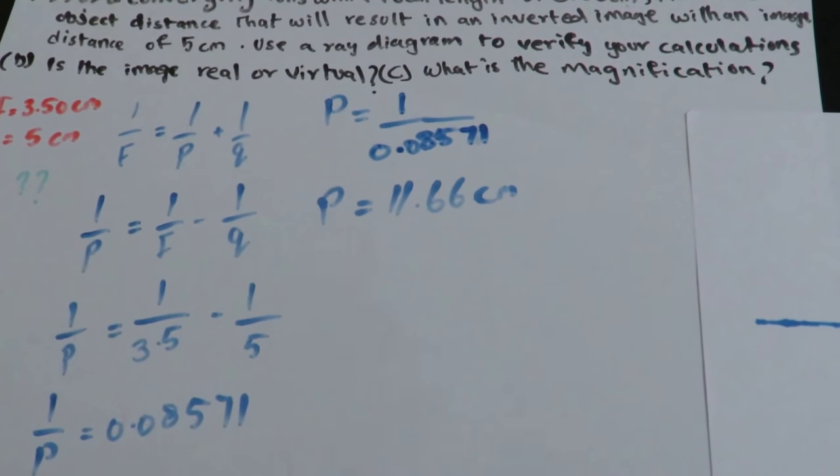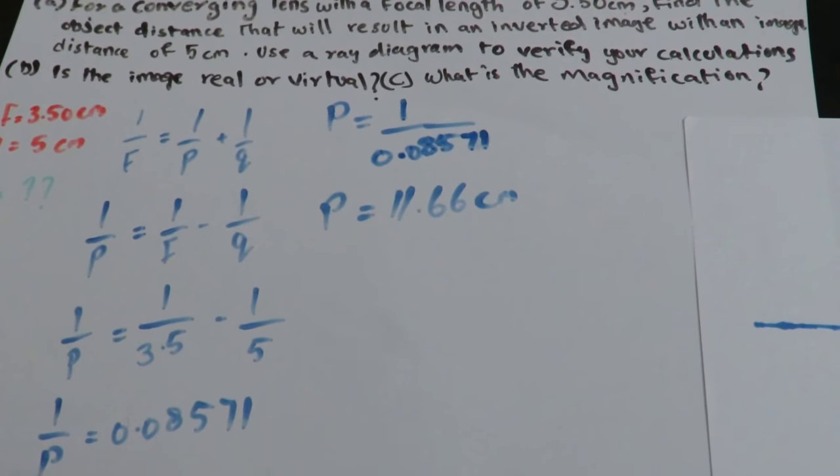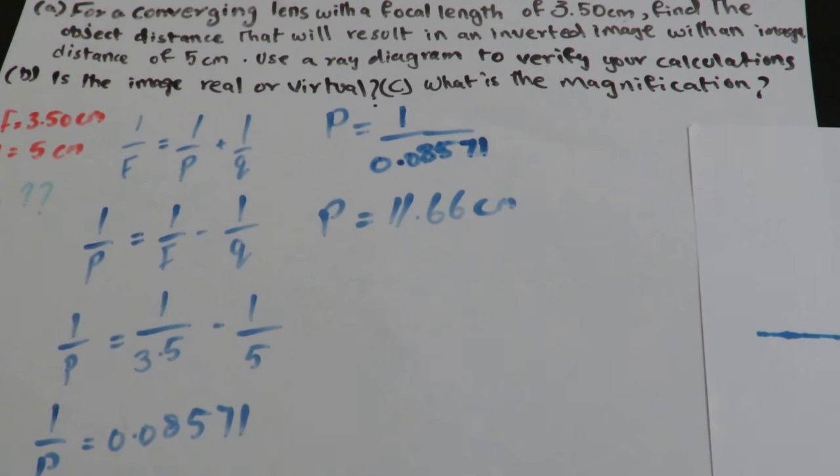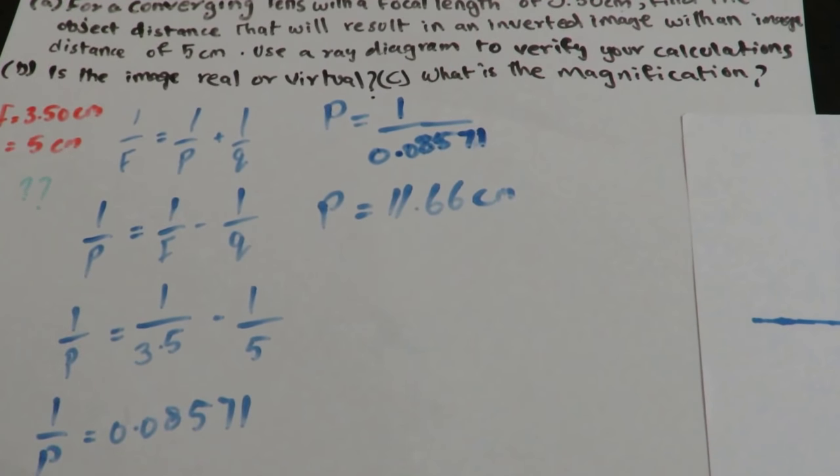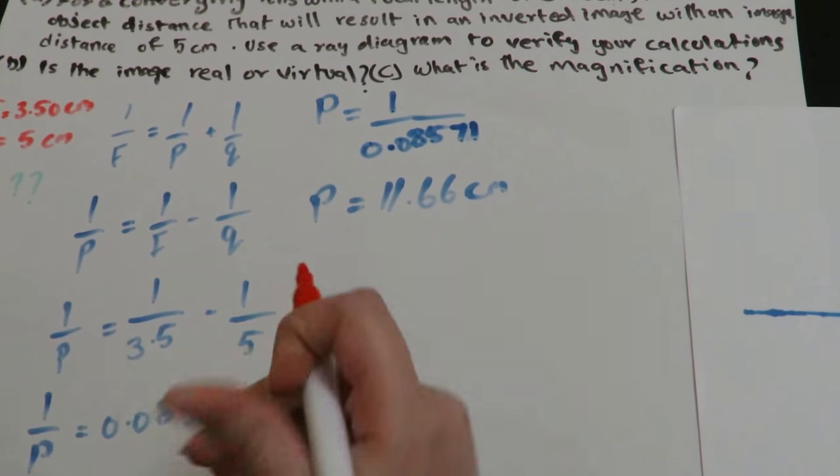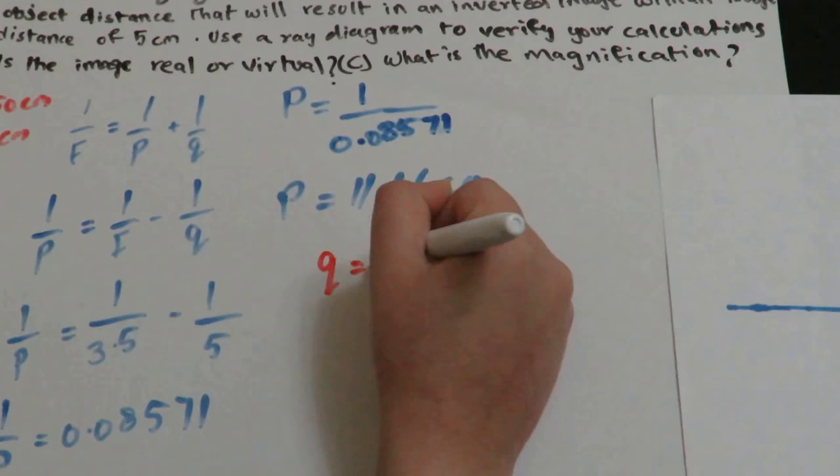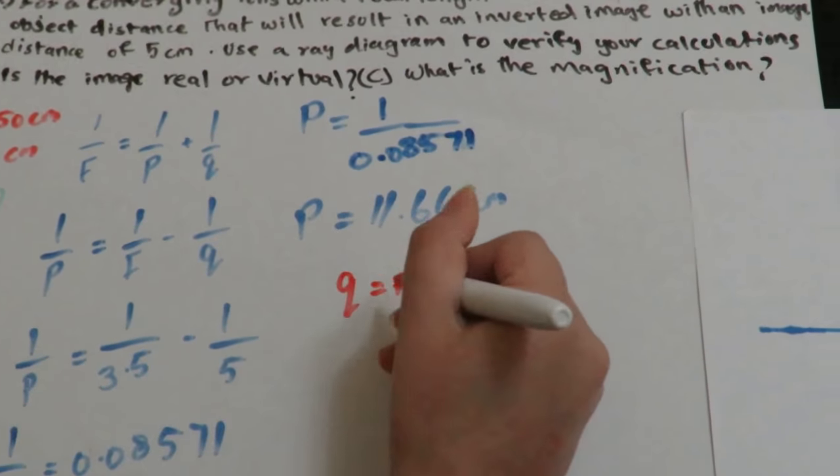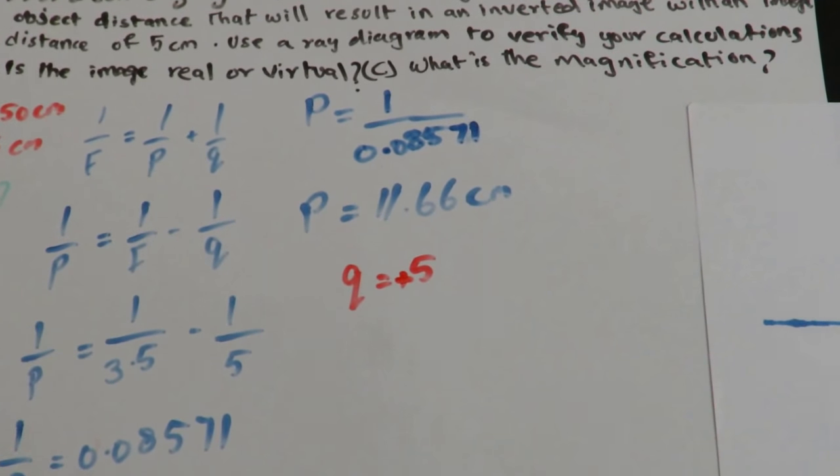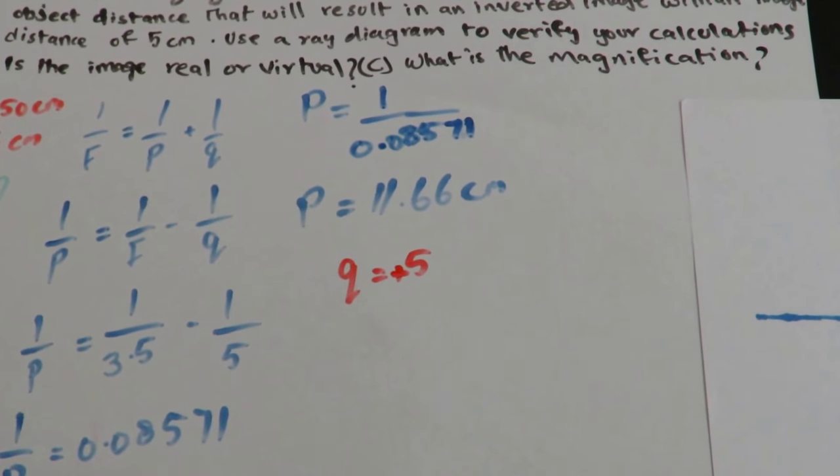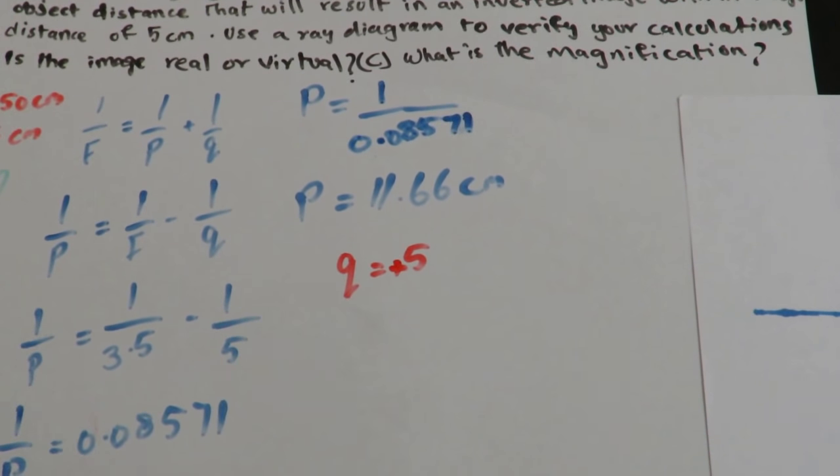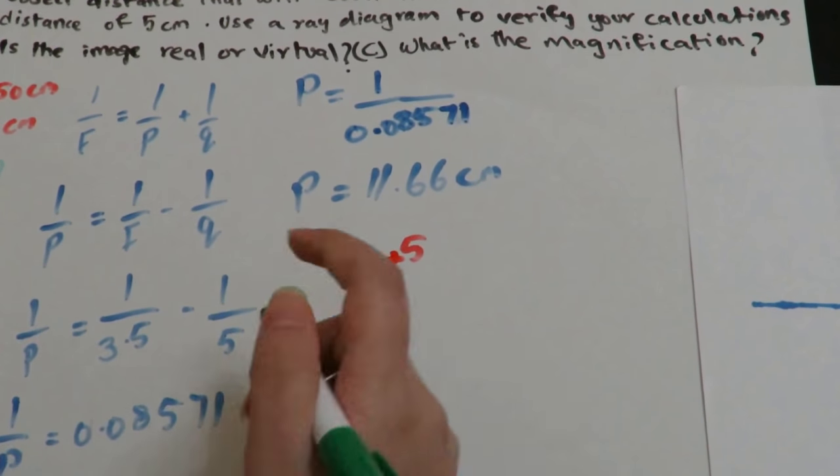In part B, as mentioned in the question, Q is 5 cm, which means it is positive. If Q is positive, this means that the image is real.